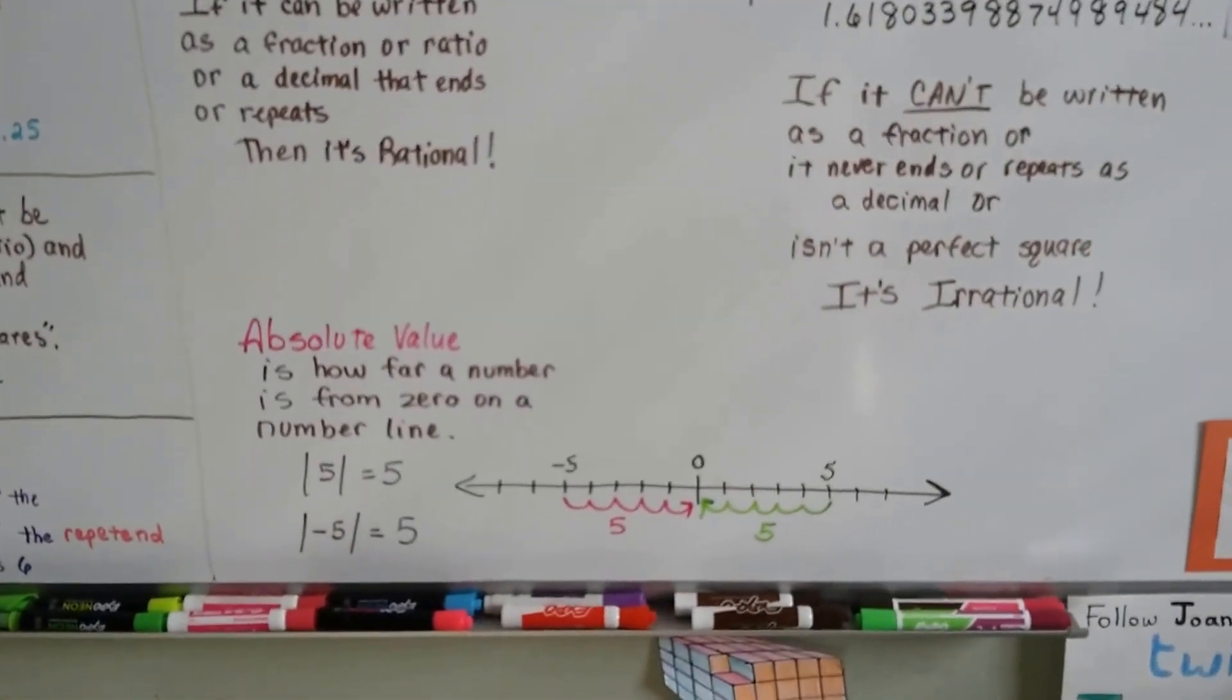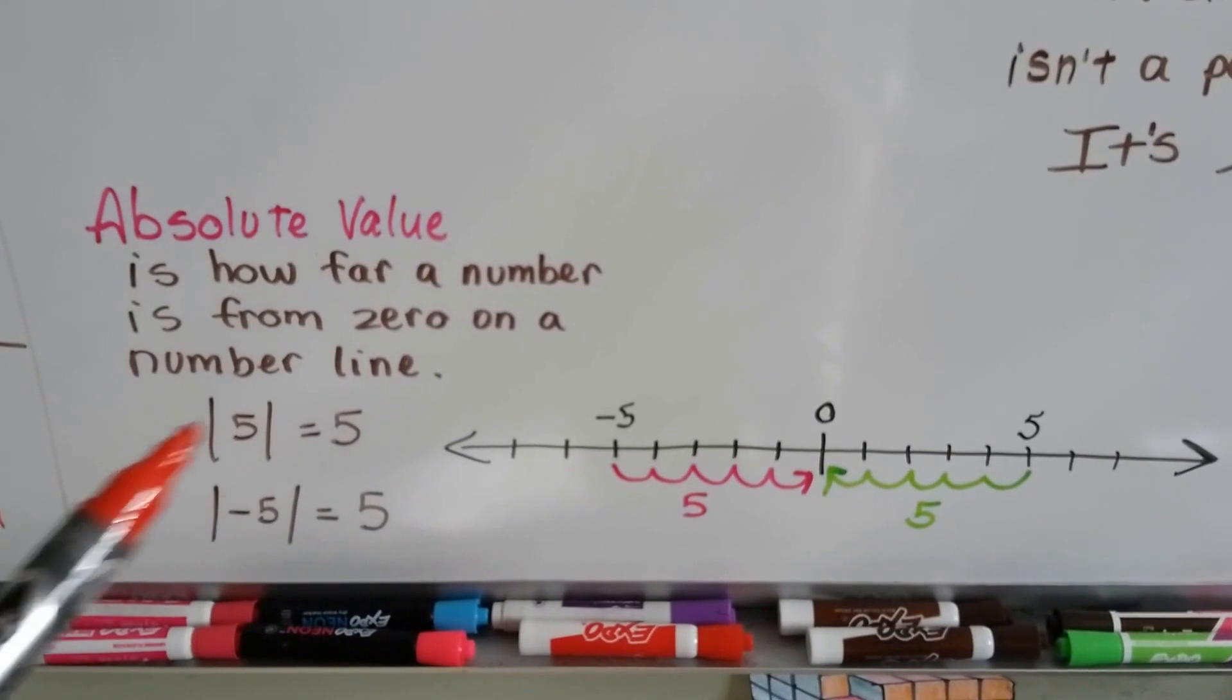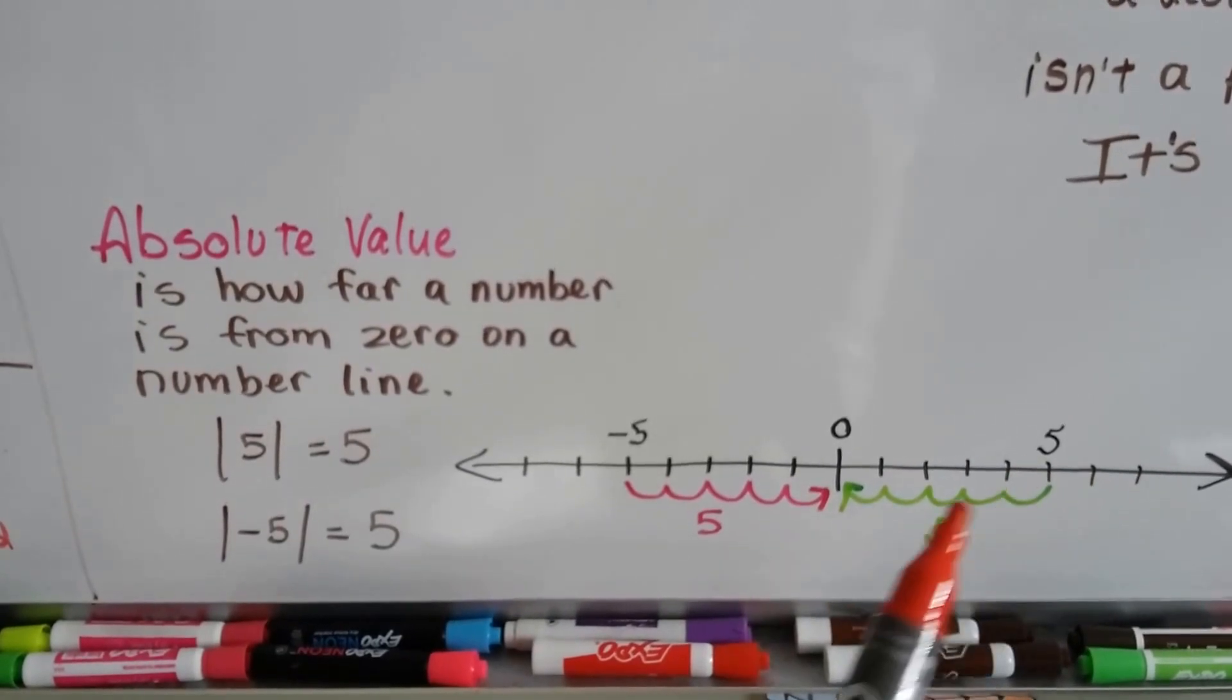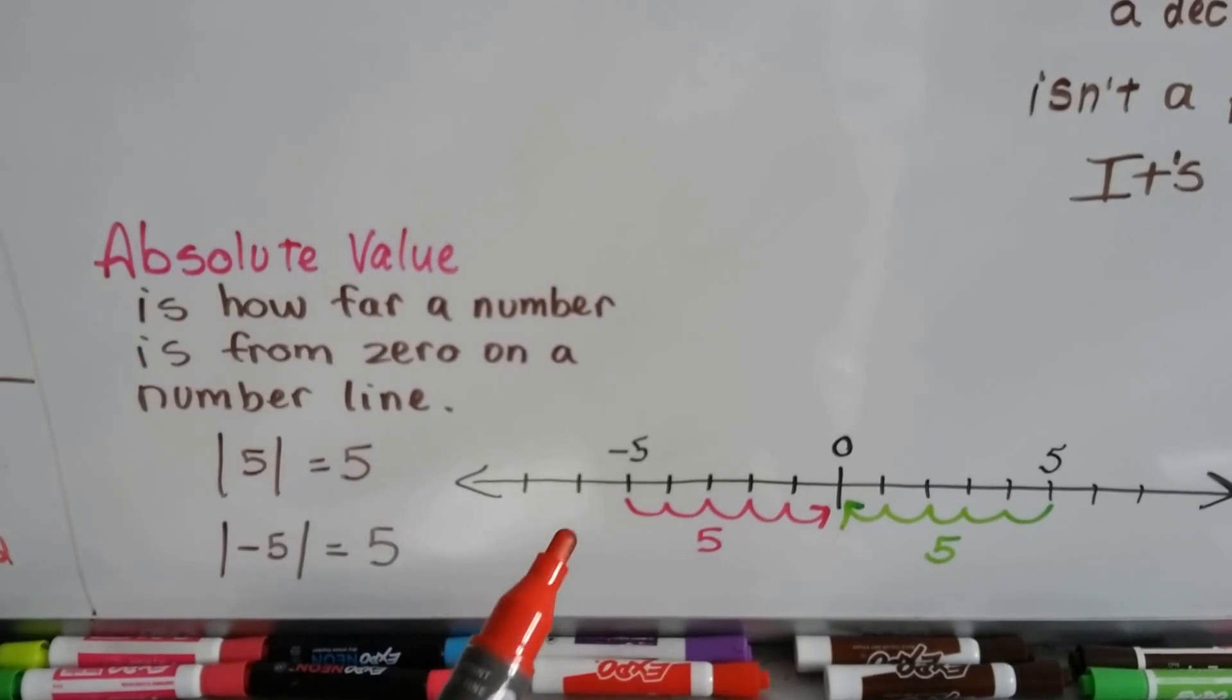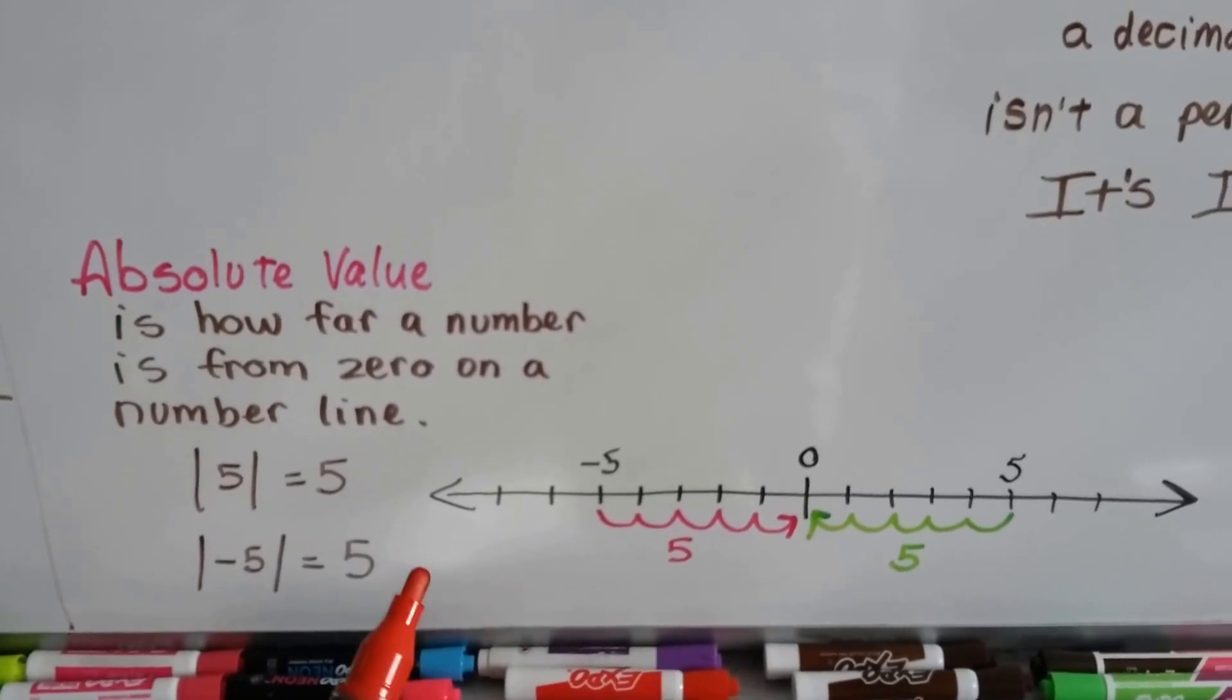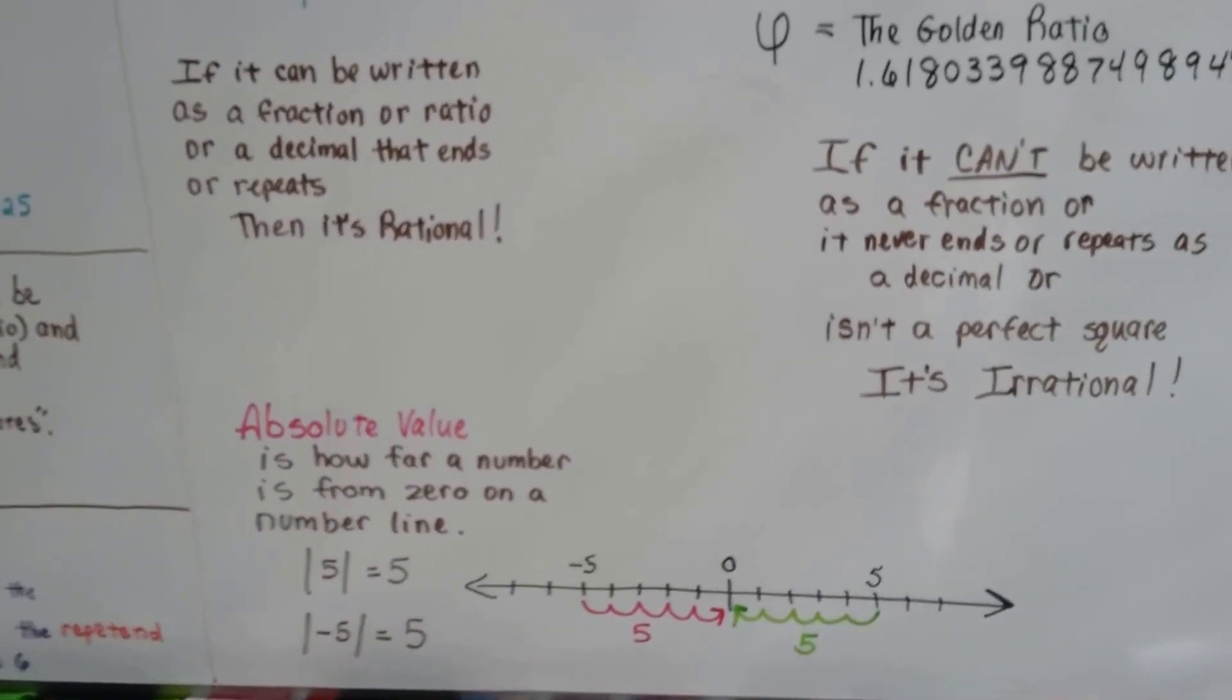Remember from algebra 1, absolute value is just how far a number is from zero on a number line. The absolute value of positive 5 is 5 hops away from zero, and the absolute value of negative 5 is also 5 hops away from zero. Just remember that absolute value is how many hops or skips away it is from zero on the number line, regardless if it's negative or positive.